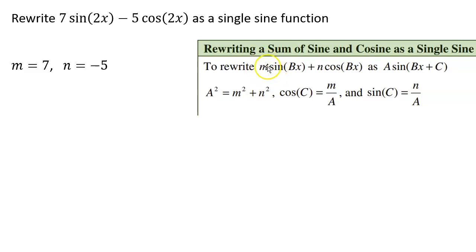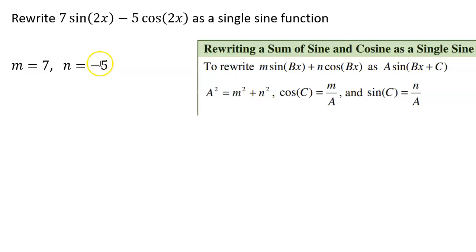Let's match up our expression with our target form. The m in this expression is the number multiplying sine, which is 7. And n is the number multiplying cosine, which in this case is negative 5. So we have m equals 7 and n equals negative 5.